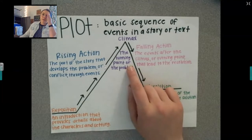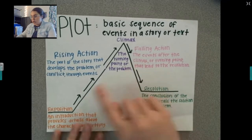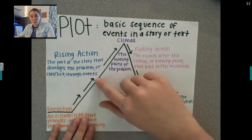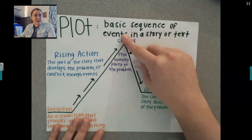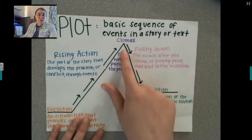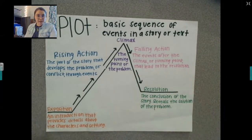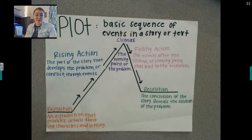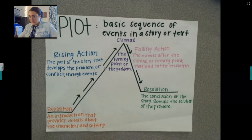So the main problem in Gregor the Overlander, in my opinion, would be that he is stuck — he is stuck down there. So the rising action would be: he was in the laundry room and Boots found a hole and fell down the hole and he followed. Then he's stuck in the underland and can't get out. So they're going on a journey through the underland to find his dad and get out of there. Do we know the resolution yet? No, we are not at the end of the book.